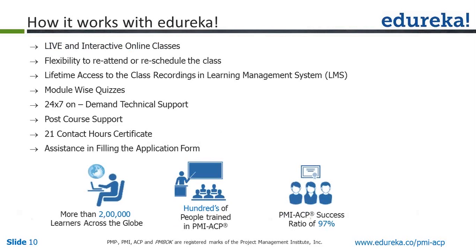If you plan to enroll through the Edureka website, you would have live and interactive trainer-conducted sessions. You get lifetime access to all training material and three mock tests. There is 24/7 technical support — even after training is over, if you have any doubts you can reach out to the support team. You get your 21 PDUs. In case you have already appeared for PMI-ACP and need 30 PDUs for renewal, Edureka keeps conducting various webinars from which you can earn one PDU each.